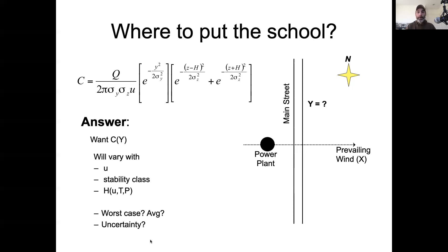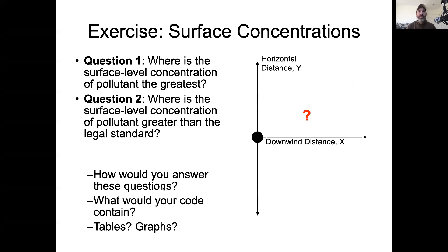So let's start with a simple version of this. Where's the surface concentration the greatest? And where is it above some legal standard? Let's assume for this particular exercise, we work with particulate matter. There's PM2.5 and PM10 for two different classes of particulate sizes. Let's say we have some EPA standard that describes the particulate matter that we can be exposed to.